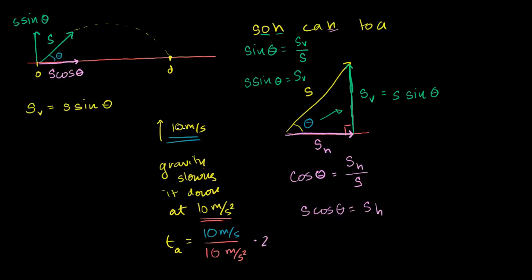If the object was moving upwards at 20 meters per second, and gravity is still decelerating it at 10 meters per second squared, then it's going to take 2 seconds to slow to 0, and then 2 more seconds to fall back to the ground. So no matter what your upward velocity, the time in the air is your vertical speed divided by the acceleration of gravity, times 2. We're assuming no air resistance, so this is the time up, and the time down is exactly the same.